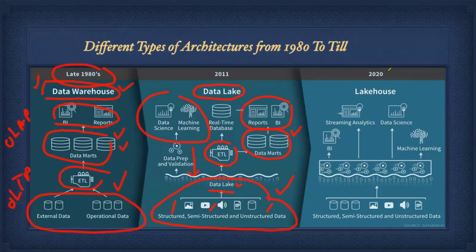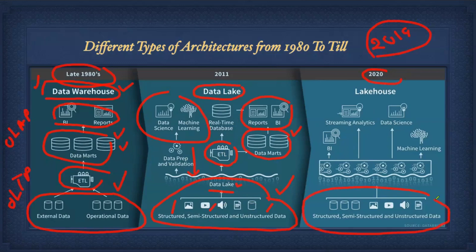In 2019, Databricks introduced the lake house architecture — a combination of Databricks plus Delta Lake. Your data lives on the data lake, and on top of the data lake you use Delta Lake with Databricks.